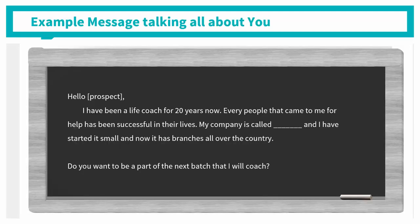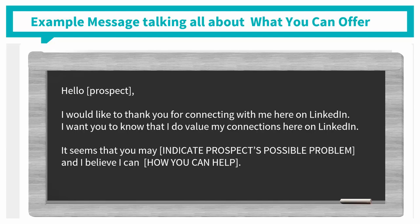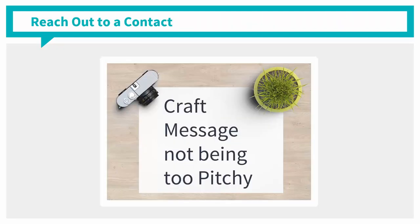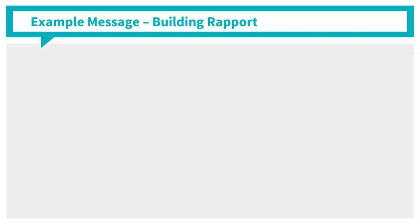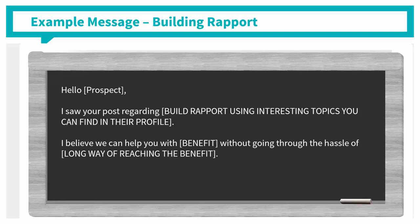Here's an example of a message talking all about you — this is an example of what not to send. Now, here's an example of a message talking about what you can offer to your prospect. Start with how you appreciate them accepting your connection. Then indicate a possible problem that your prospect might encounter and how you can help them. Craft your message without being too pitchy like a salesman. People hate it when the reason you approach them is to sell them something. In this example, you're building rapport using topics you've learned from their profile and pointing out the benefit they can get from working with you.